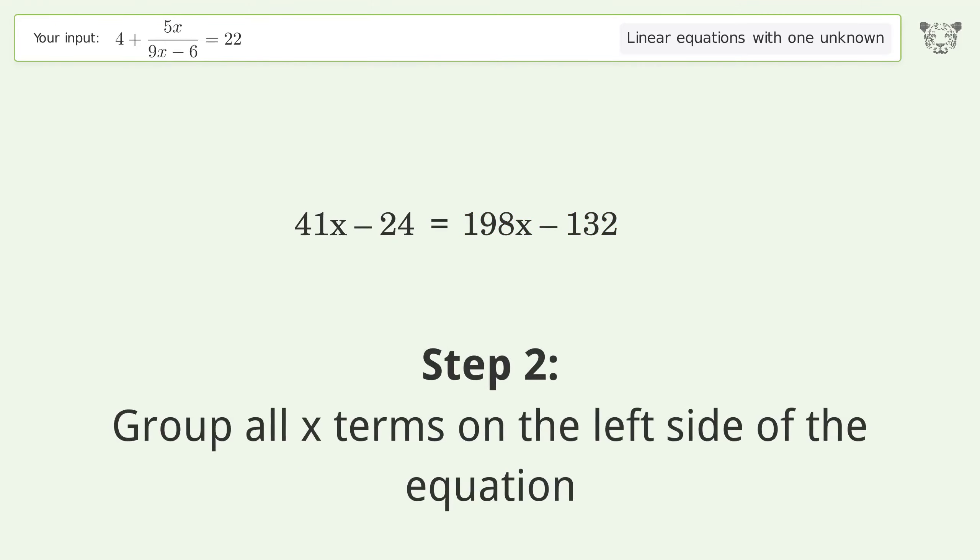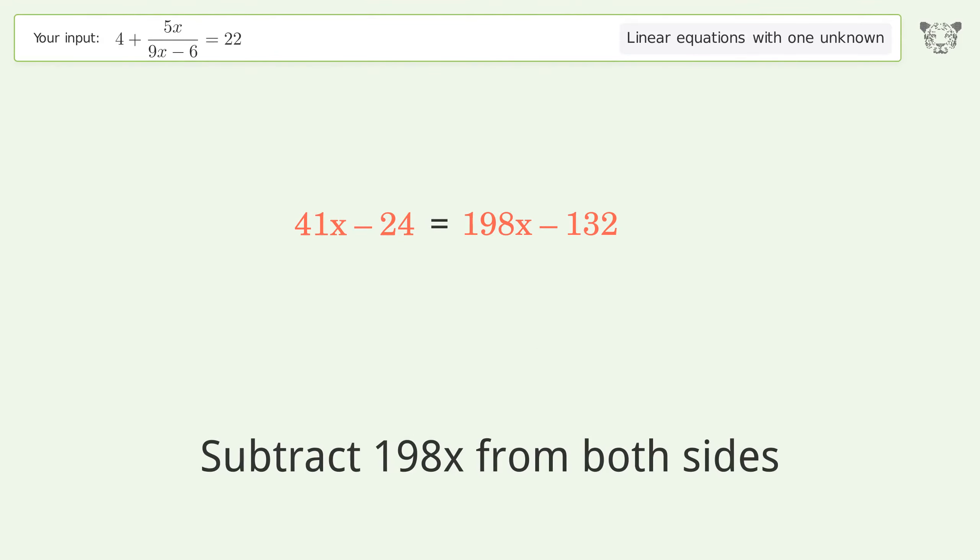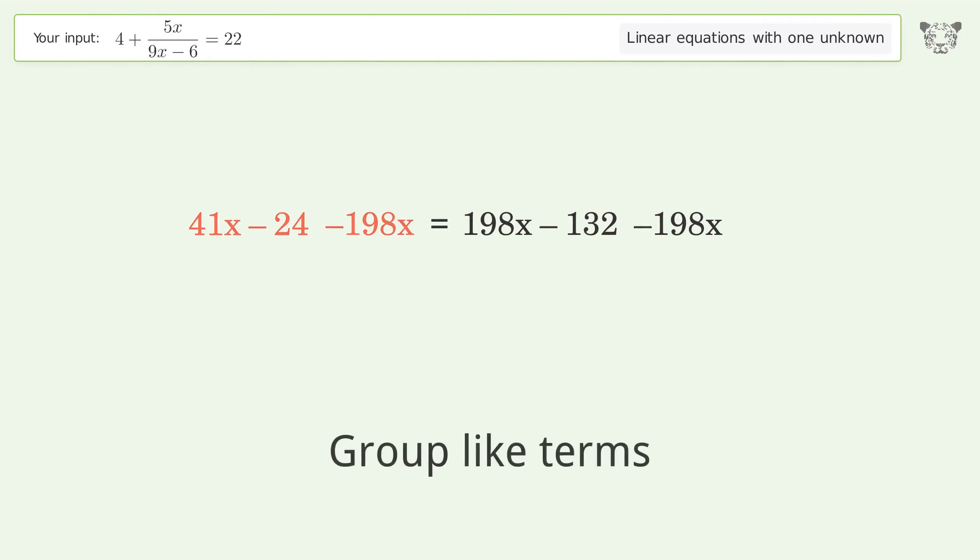Group all x terms on the left side of the equation. Subtract 198x from both sides. Group like terms. Simplify the arithmetic.